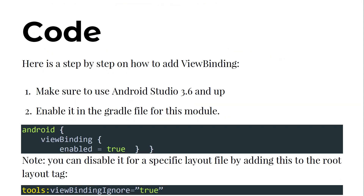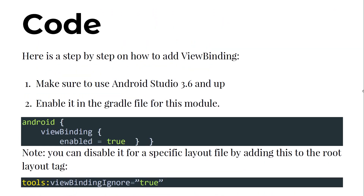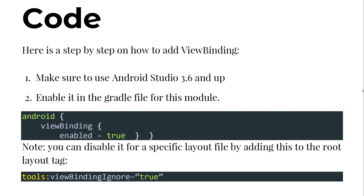Here are the steps to add view binding to your application. First, make sure to use Android Studio 3.6 and up. To enable it in the Gradle file for this module, set android.viewBinding.enabled = true. Note: you can disable it for a specific layout file by adding tools:viewBindingIgnore="true" to the root layout tag.